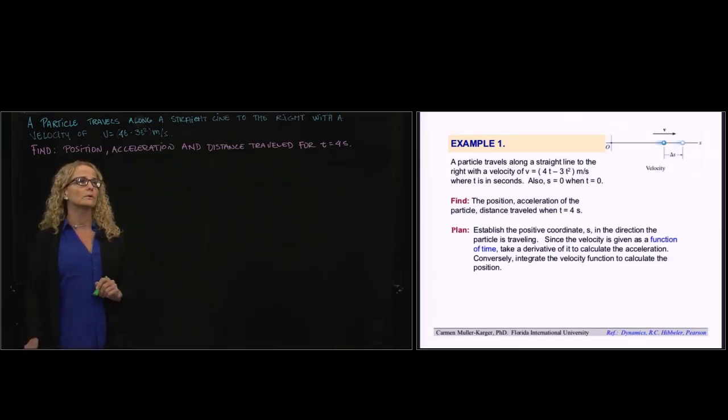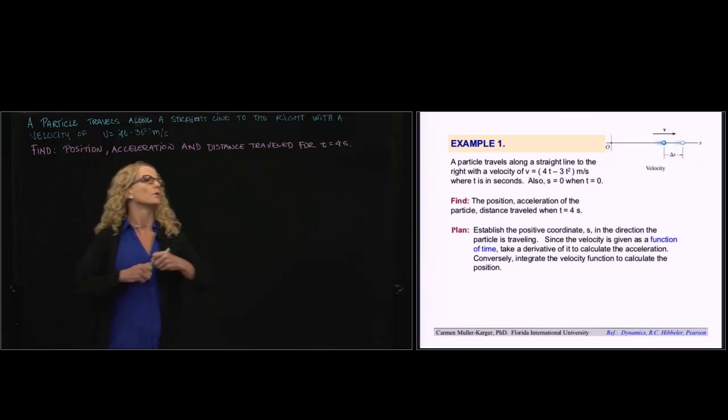A particle travels along a straight line to the right with a velocity of v = 4t - 3t² meters per second. And we want to find the position, acceleration, and the distance traveled in 4 seconds.